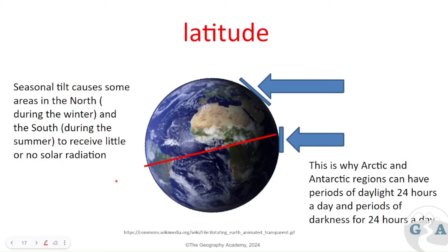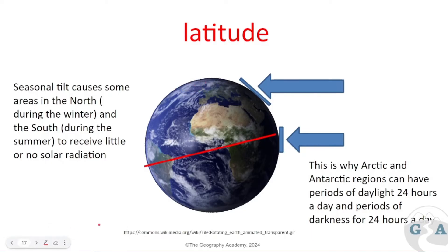We also see seasonal variation due to the earth's tilt. When the earth is tilted in one direction, it is winter in the northern hemisphere and summer in the southern hemisphere. The southern hemisphere receives more solar radiation more directly than the equator during this period. At the poles, there will be no sunlight at all as the earth rotates — causing incredibly cold conditions during certain periods of the year.